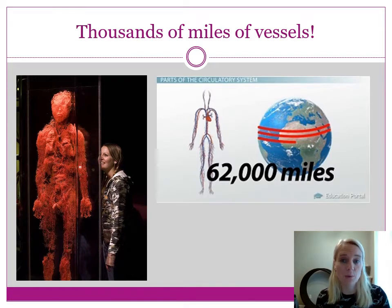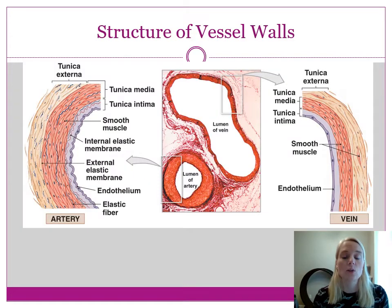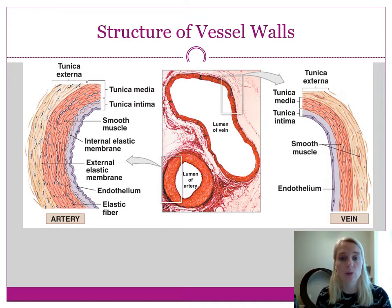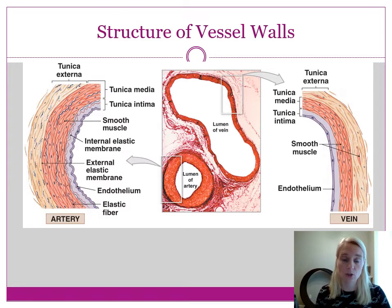This first video we're going to look at is the anatomy of blood vessels — specifically the differences and structures between arteries, veins, and capillaries. Arteries are blood vessels that move blood away from the heart — A for artery, A for away. Veins bring blood back to the heart after it's passed through all the capillary beds. Capillaries are just the connectors in between. So arteries are away, veins are back to the heart.